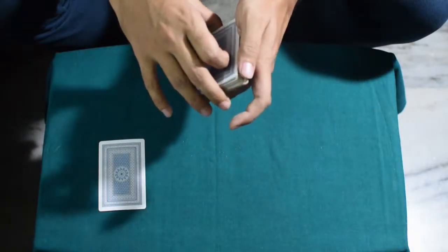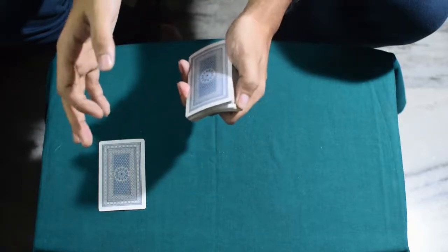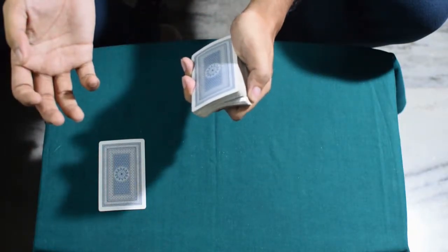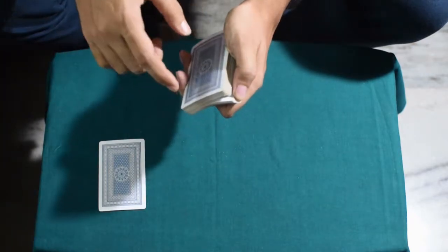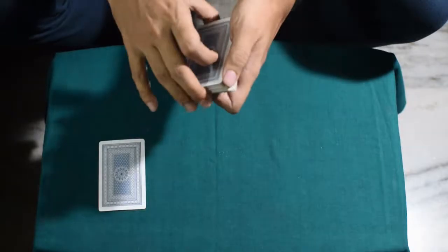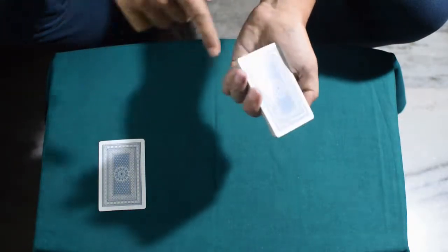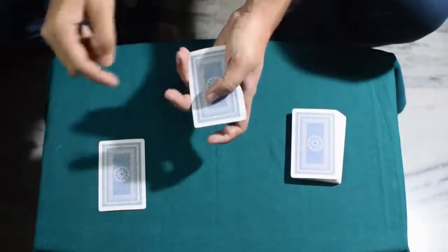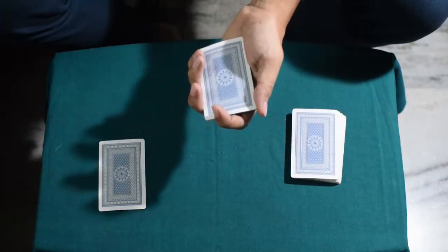And now you're still holding your pinky break. You riffle off and do a riffle force for the spectator. What you do is just riffle off the deck like this, and no matter whatever they said stop, you lift at the break. So let's say they said stop here.